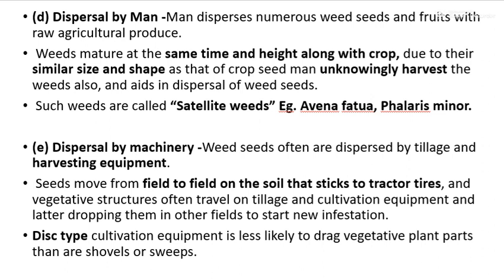Dispersal by machinery: weed seeds are often dispersed by tillage and harvesting equipment moving from one field to another, through soil sticking to tractor tires. Vegetative structures also travel on tillage and cultivation equipment and are later dropped into another field, starting a new infestation. Disc-type cultivation equipment is less likely to drag plant parts than shovels and sweeps.